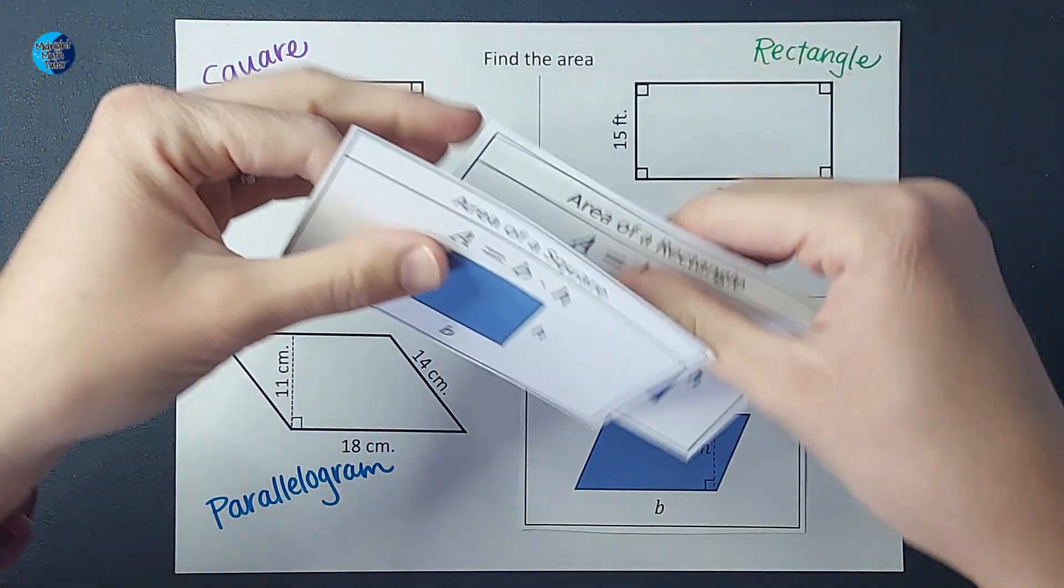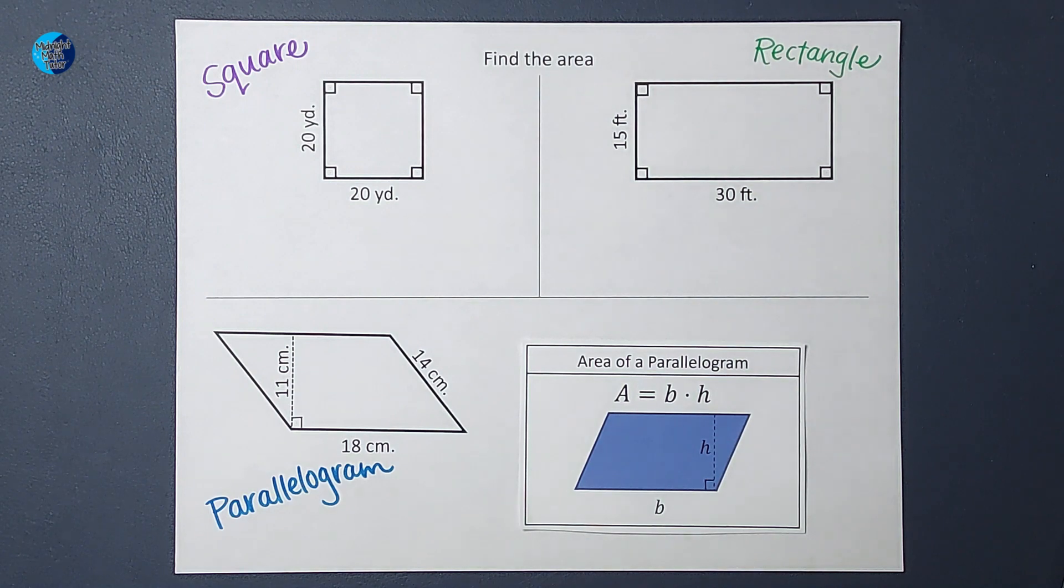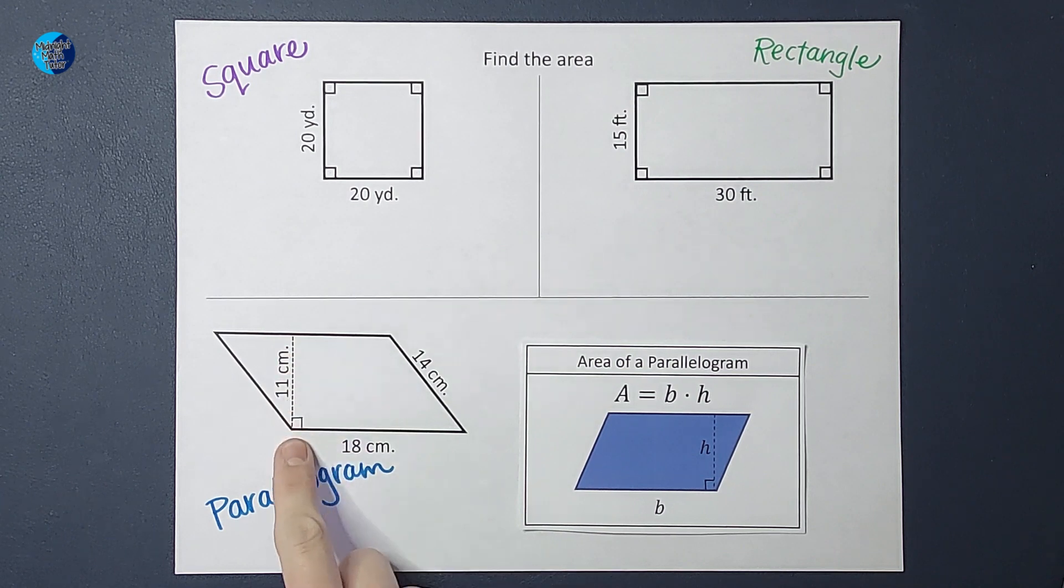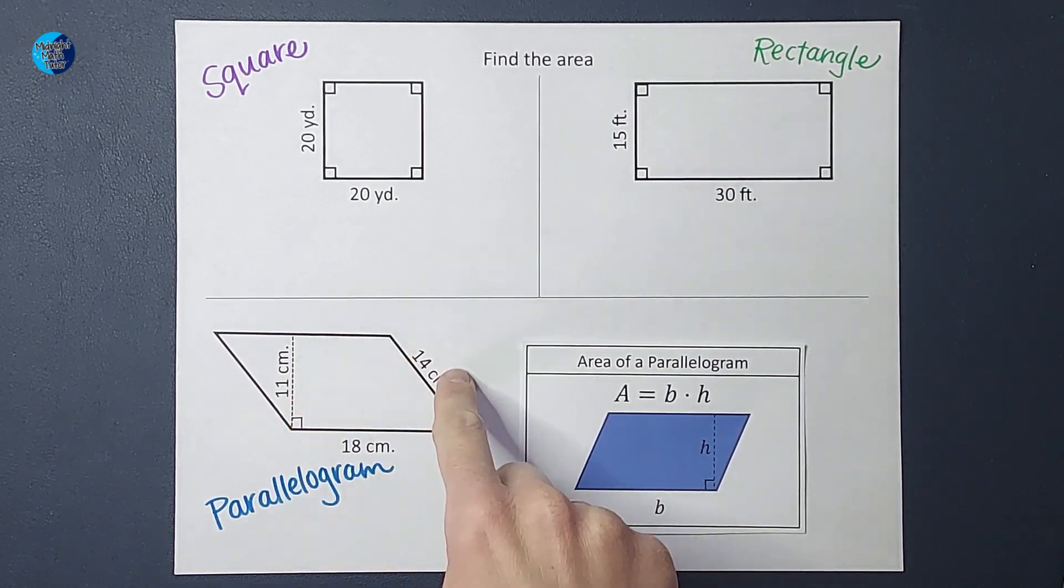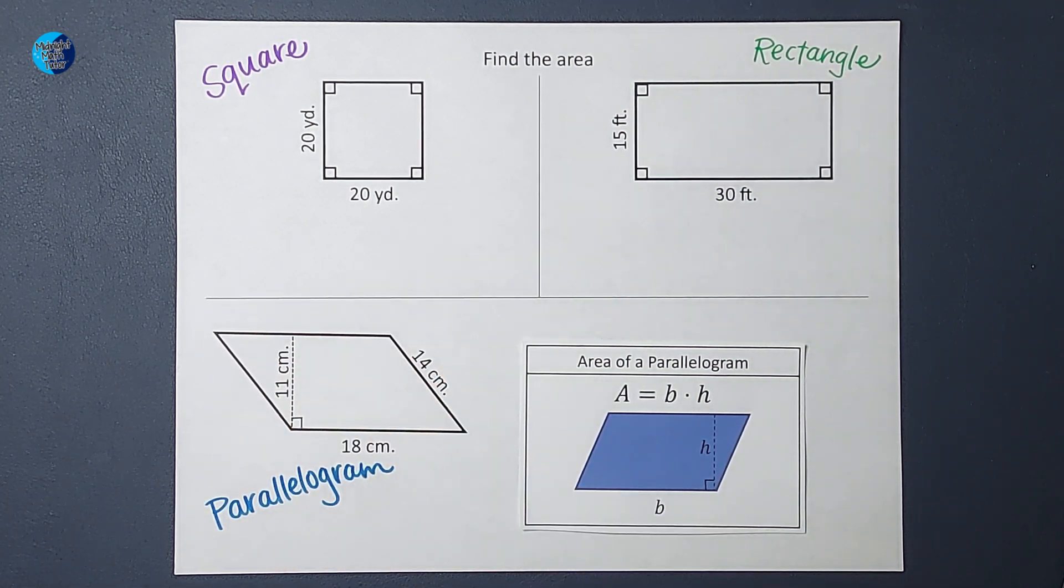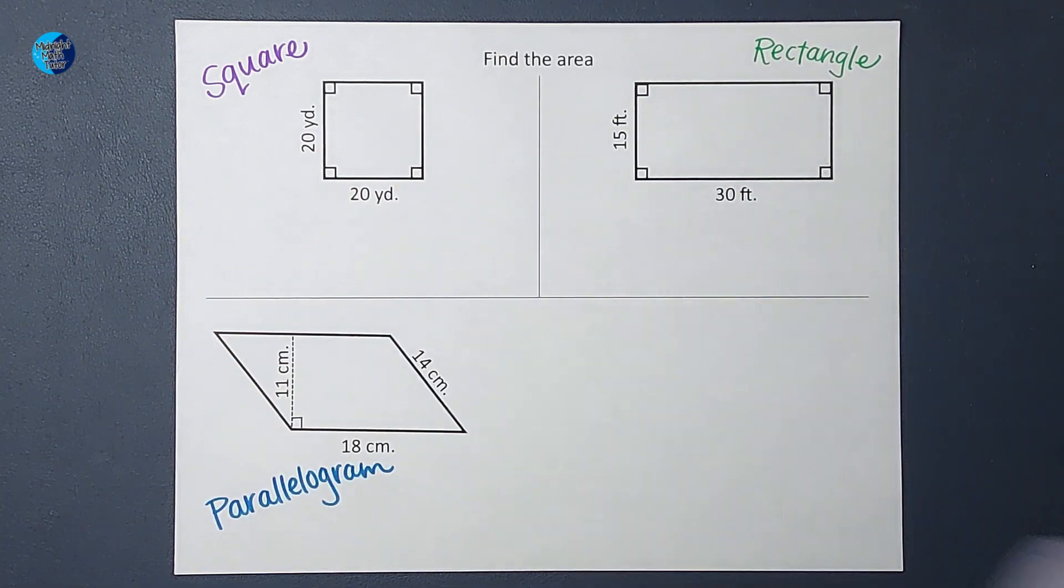If you're like, 'okay that makes sense for the square and the rectangle, but why does the parallelogram get to be that as well when it's slanted?' Well, I want you to picture if we were to cut this little triangle right here and put it there—it would make a rectangle. So just rearrange, and it is also base times height.